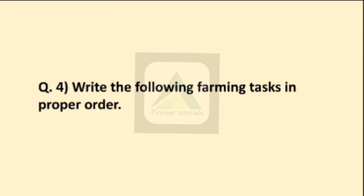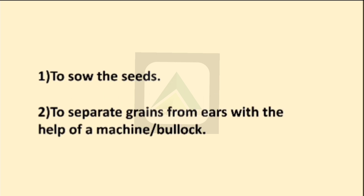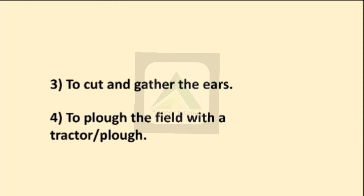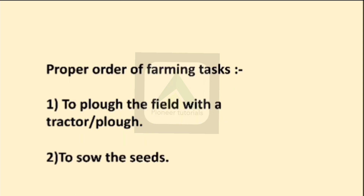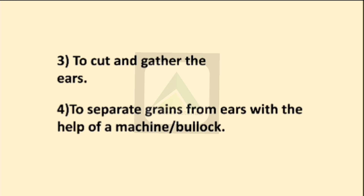Question number 4: write the following farming task in proper order. The proper order of farming tasks is: first, plow the field with a tractor and plow; second, sow the seed; third, cut and gather the ears; fourth, separate grain from ears with the help of a machine and bullock.